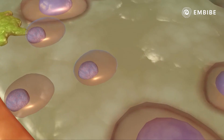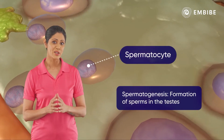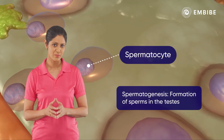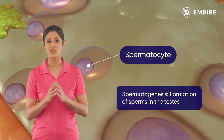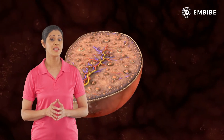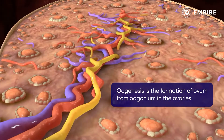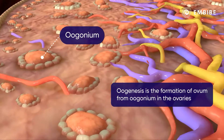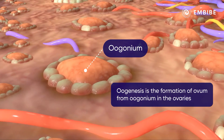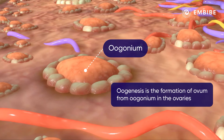In the testis, diploid spermatocytes transform into haploid sperms by the process of spermatogenesis. Whereas inside the ovaries, diploid stem cell oogonium transforms into haploid ovum by the process of oogenesis.